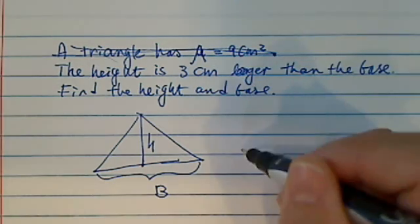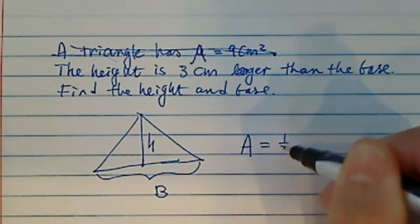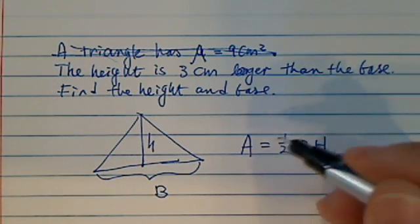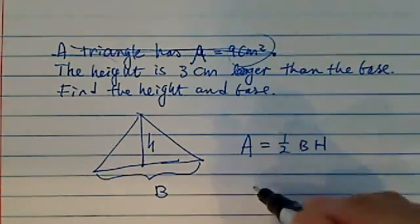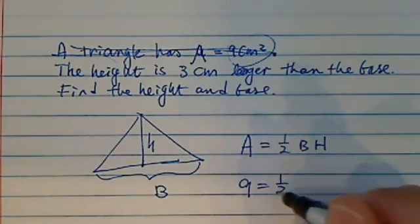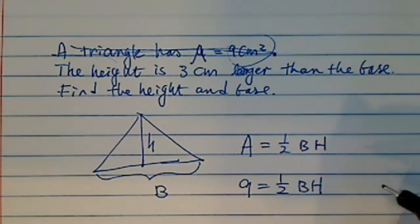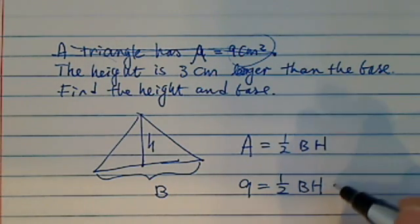The first thing you do is turn this one into an equation. It says area is equal to half base times height. And since we're given it's 9 centimeters, so your first equation is half base times height equal to 9. So this is the first equation.